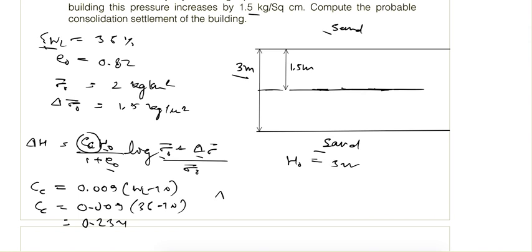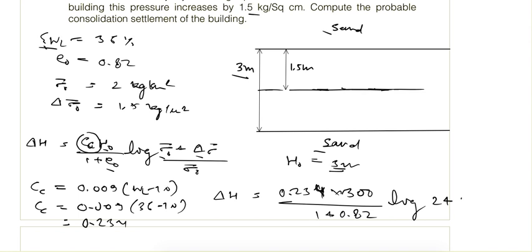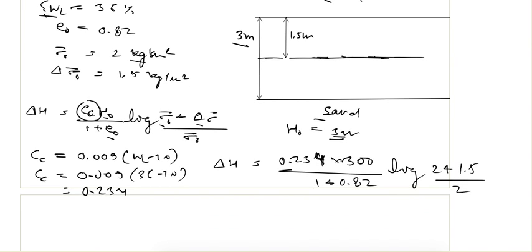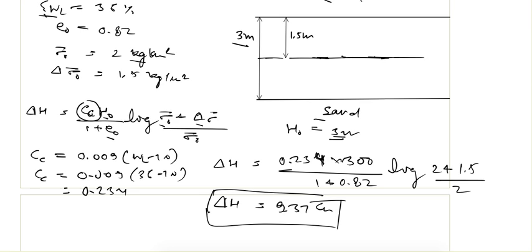The settlement can be calculated as: delta H = 0.234 × 300 cm / (1 + 0.82) × log((2 + 1.5) / 2). We don't need to worry about the units of stress because they cancel out. The settlement comes out to be 9.37 centimeters. This is the answer — a very easy question.